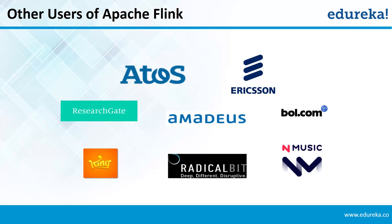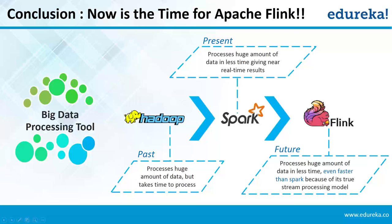There are other users of Apache Flink apart from Bouygues Telecom and Yahoo — including Amadeus, Radical, Atos, Bolcom, and many more. In conclusion: Hadoop gave us a way to store huge amounts of data and analyze it using MapReduce. Then came Spark, which processes huge amounts of data in near real-time using micro-batching with in-memory computation. Finally, Apache Flink also processes huge amounts of data in real-time, even faster than Spark because of its true stream processing model. And hence, it's Flink time.